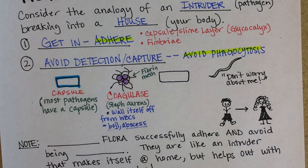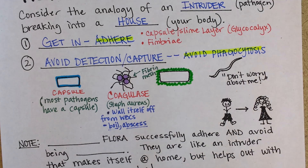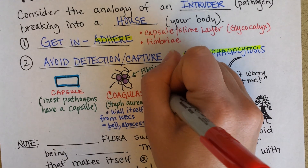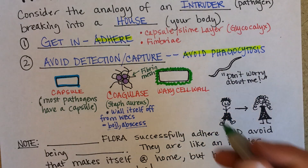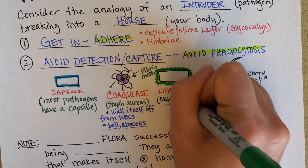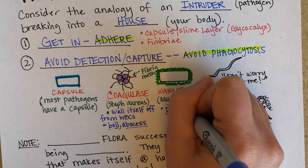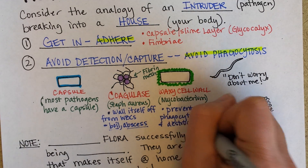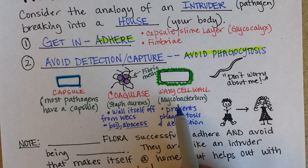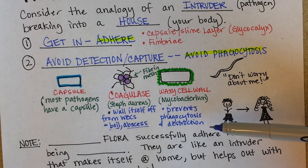Another example is mycobacterium, represented here with a green squiggle showing its waxy cell wall. This waxy wall makes it hard for the bacteria to be engulfed by white blood cells. In fact, this can be so effective that even if mycobacterium does eventually get phagocytosed, it is unable to be destroyed by those white blood cells — which is why tuberculosis can be a very hard disease to eradicate.